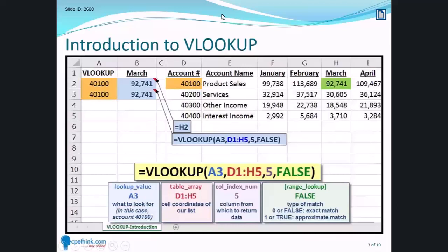VLOOKUP automates that manual tracking for me and makes my formula dynamic. For VLOOKUP to do what it does, it needs four different arguments. The first argument is the lookup value, what to look for. I'm looking for account 40100, so that's whatever's in cell A3. Next is the table array, just a fancy way of referencing the cell coordinates of our list.